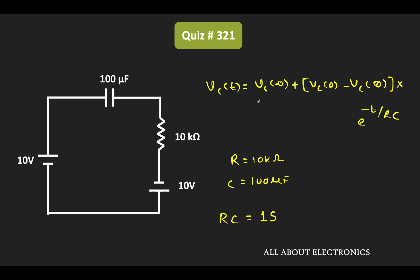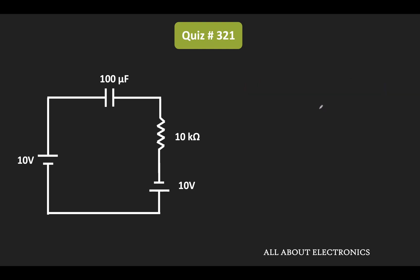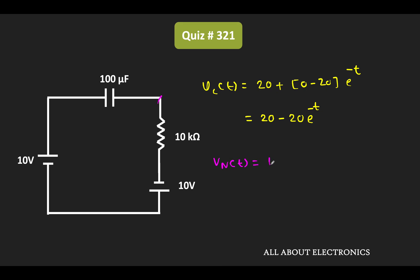Substituting the initial and final values, Vc(t) equals 20 plus (0 - 20) times e to the power of minus t, which gives Vc(t) equals 20 minus 20·e^(-t). Therefore, Vn equals 10 minus Vc, giving Vn(t) equals 10 minus (20 minus 20·e^(-t)), which simplifies to Vn(t) equals -10 plus 20·e^(-t).